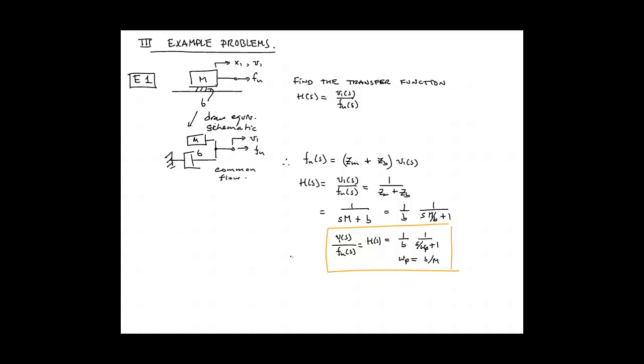Note that we could also have expressed the denominator as 1 plus S times tau, the system time constant, where tau is equal to M divided by B. For this first problem let's take a couple minutes and answer the question of what is the significance of the transfer function. What can we learn from it? So here I've listed three or four things.